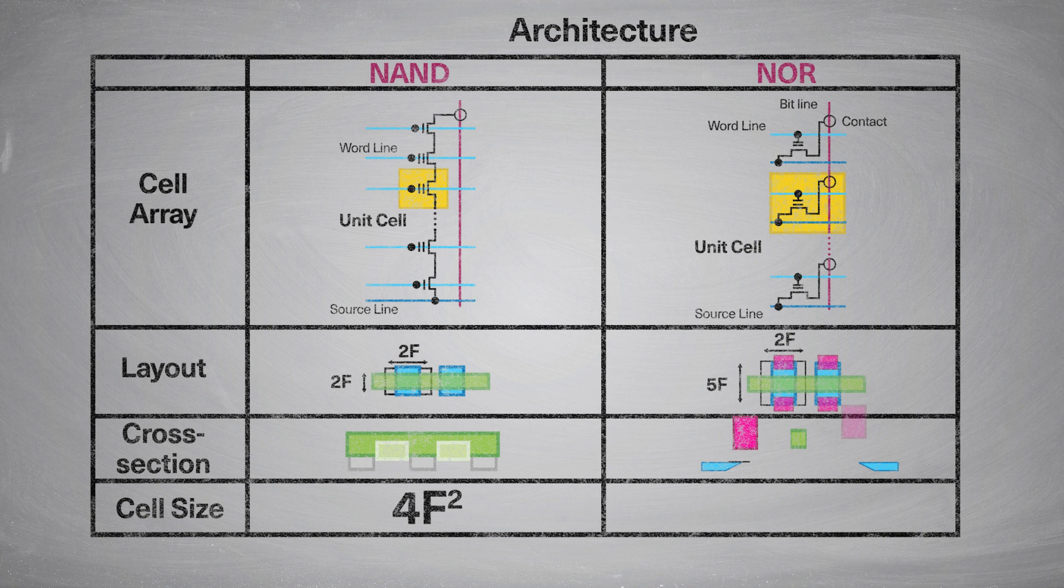Whereas in NOR Flash, the effective area is 10F squared for the same feature size. In NOR Flash, the memory cells are connected in parallel rather than in series. So this is faster for reads, but it certainly takes up a lot more space to build the memory array.